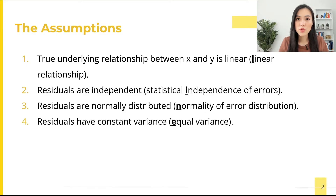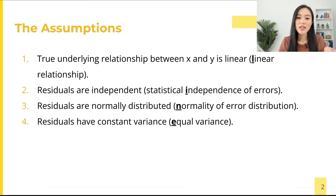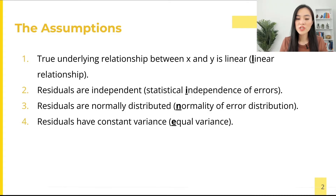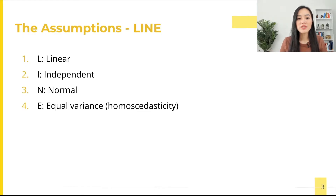The assumptions are as follows: the true underlying relationship between x and y, the independent and dependent variables, is linear; the residuals are independent; the residuals are normally distributed; and they have constant variance, i.e., homoscedasticity. So the first assumption is about the relationship between x and y, and the remaining three assumptions are about the residuals or errors.